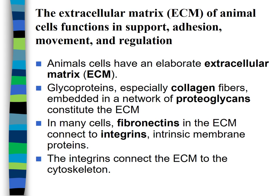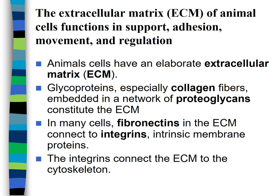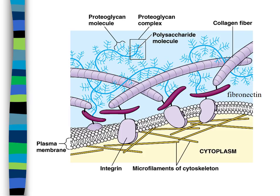Animal cells have an extracellular matrix (ECM) surrounding the cell that plays a role in support, adhesion, movement, and regulation. It is made up of glycoproteins — protein molecules with sugars attached, such as collagen, which gives your skin its elasticity. Microfilaments of the cytoskeleton can attach to the ECM, so a signal from outside — like something bumping the cell — can travel through the ECM into the microfilaments and trigger something inside the cell.